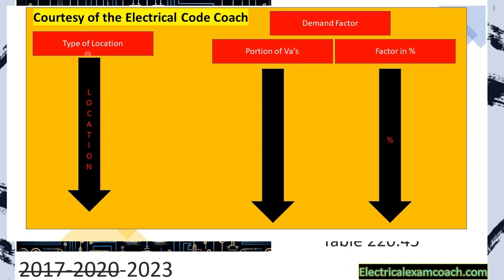On the left-hand side of the table is our type of location. You'll notice dwelling units, hotels and motels, warehouses and storage, and then a very important one at the bottom that says all other locations. So unless it's one of these locations listed above, it does not count. Dwelling units are the only one on this list that includes the receptacles as well. Everything else in this is just for lighting only.